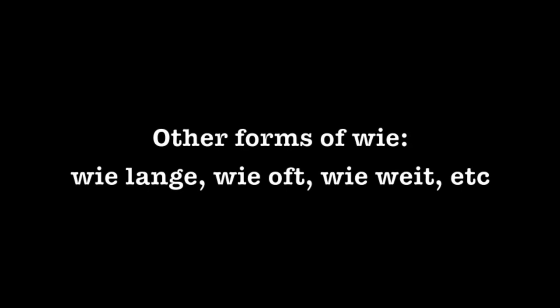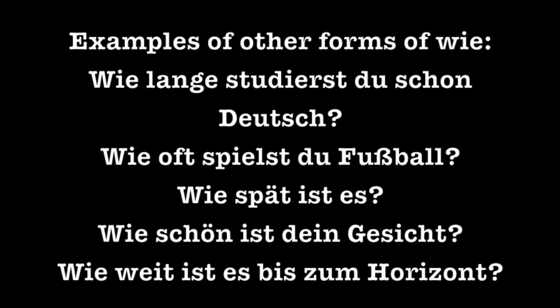There are other ways to use Wie, such as Wie lange (how long?), Wie oft (how often?), and Wie weit (how far?). You can use Wie in front of almost any adjective, so there are too many combinations to exhaust. Some examples: Wie lange studierst du schon Deutsch (how long have you been studying German?), Wie oft spielst du Fußball (how often do you play soccer?), Wie spät ist es (how late is it?), Wie schön ist dein Gesicht (how beautiful is your face?), Wie weit ist es bis zum Horizont (how far is it to the horizon?).